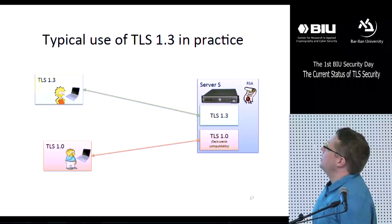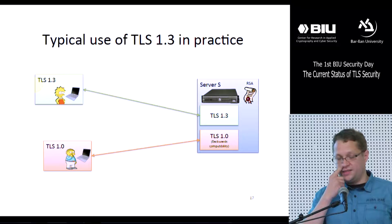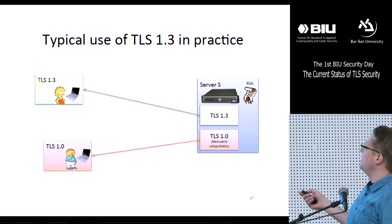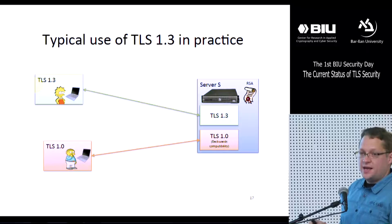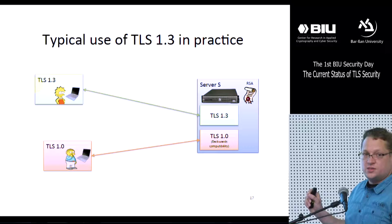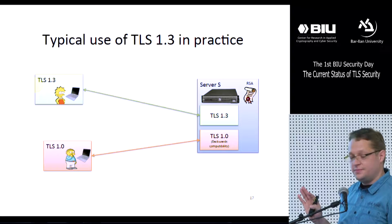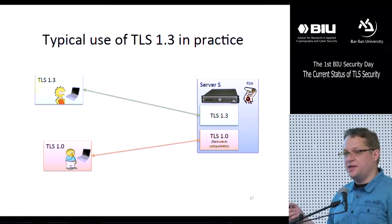Let's look at how TLS 1.3 will typically be used in practice. We consider a scenario where a web server implements TLS 1.3 and also offers an older version for backwards compatibility, like TLS 1.0. The server uses the same RSA certificates for both protocol versions — this is a standard setting, and I will explain later why this assumption is very reasonable.